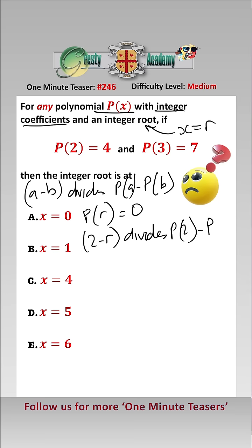2 minus P of r, which equals 4. And we also know that 3 minus r divides P of 3 minus P of r, which equals 7. Therefore, from this one we know that 2 minus r is equal to